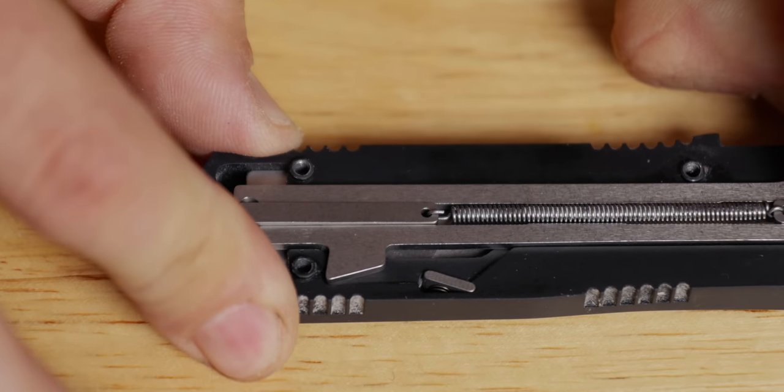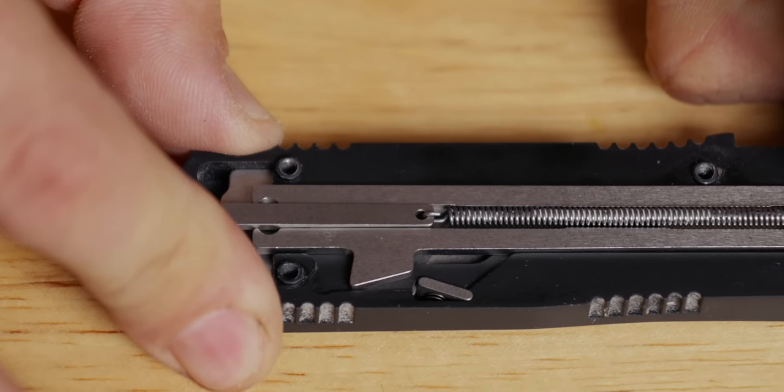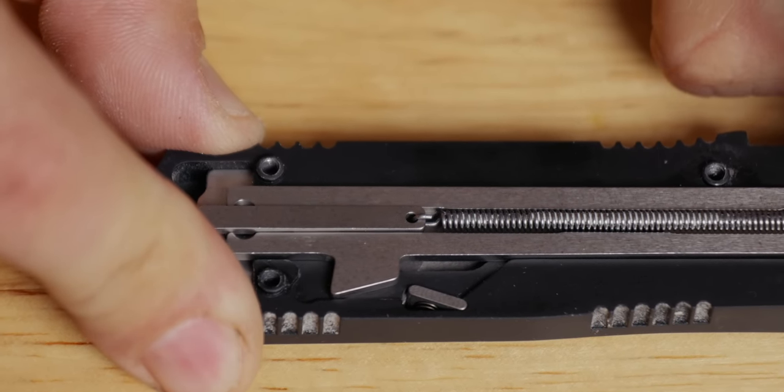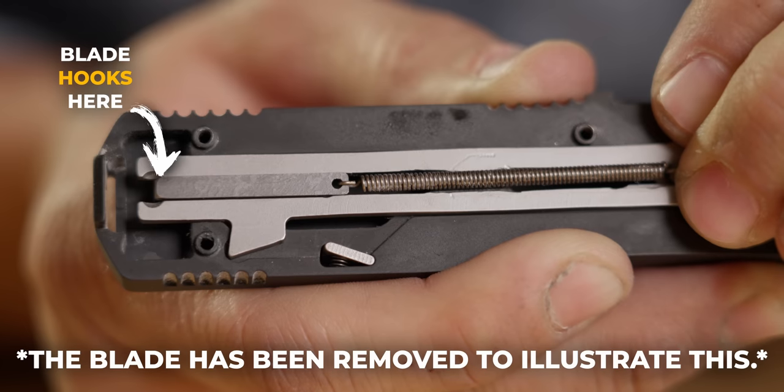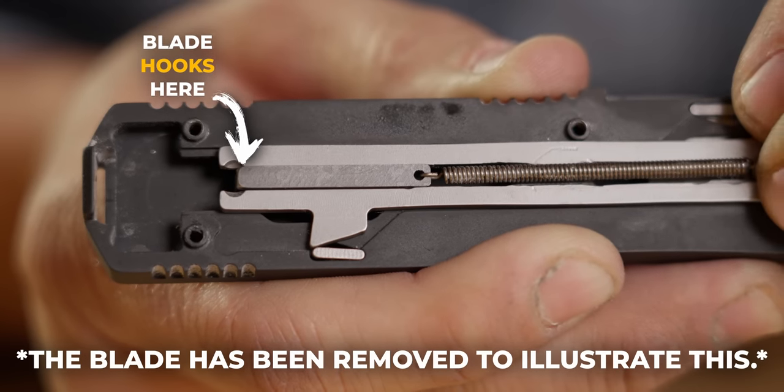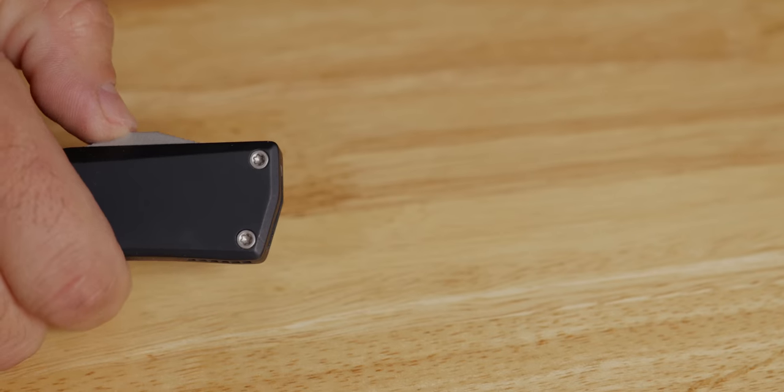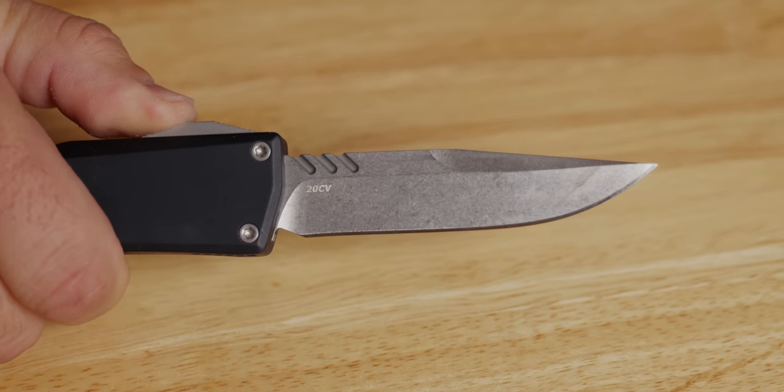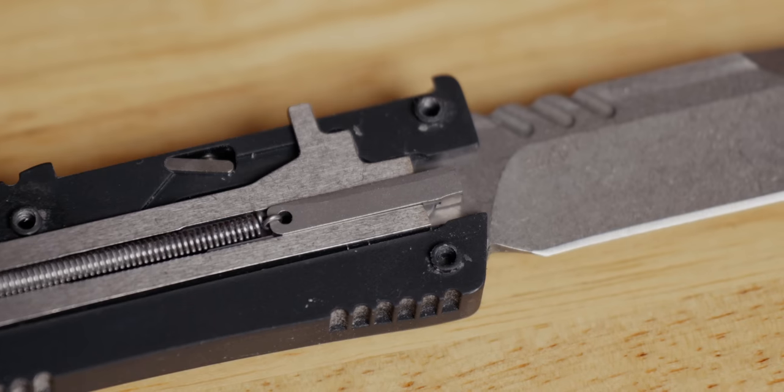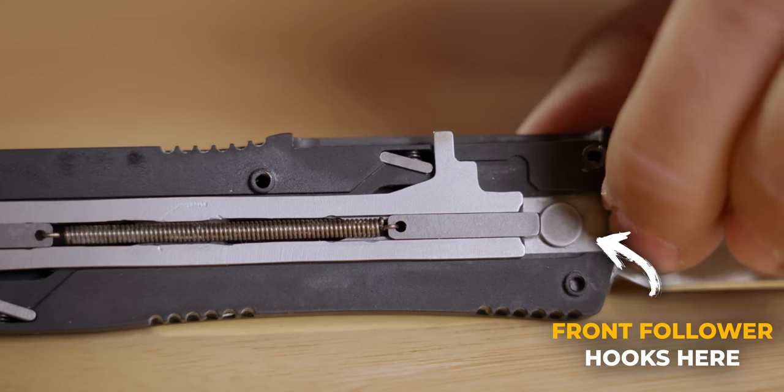The rear follower hooks to the back of your knife blade, and the front of the track connects to your trigger. As you push the trigger forward, the rear follower and blade stay in place, and the firing spring stretches until the back of the track overcomes the rear locking tab. This shoots the knife blade out the front of the body, and it's caught in the open position by the stop pin in the blade.